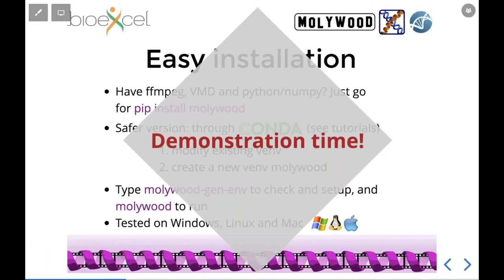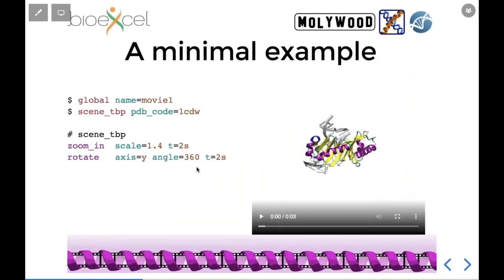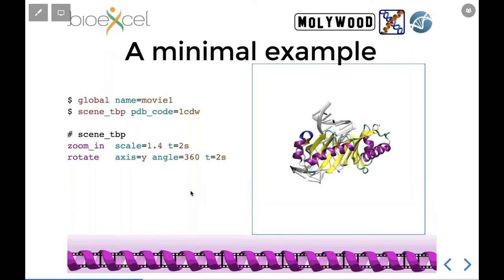Back to the presentation - here is a minimal example input. It defines a scene named 'tbp' - TBP stands for TATA-binding protein - the content is a PDB with code 1CW, which is the TATA-binding protein, and the list of actions is: zoom in by 1.4 over two seconds, then rotate around the y-axis by 360 degrees over two seconds. That syntax is intuitive, and that's exactly what happens in the resulting movie.